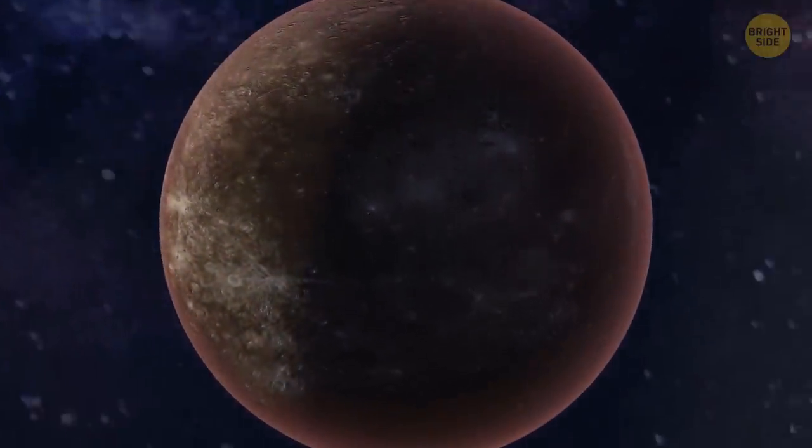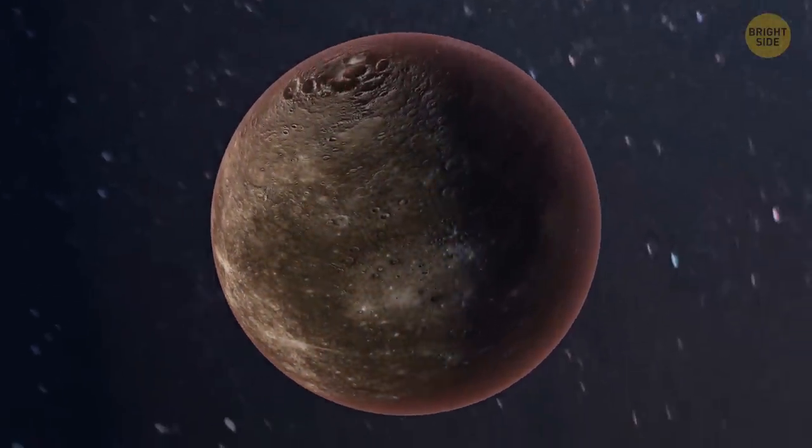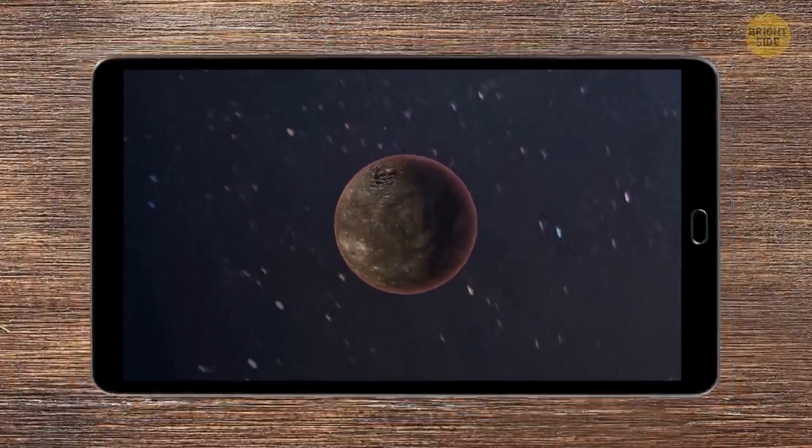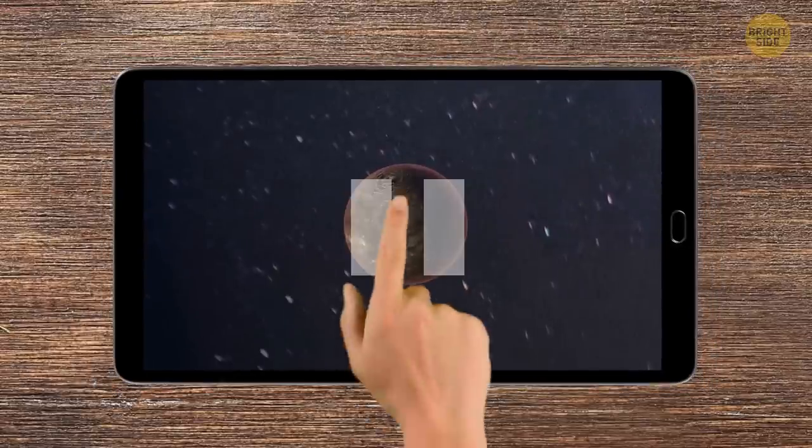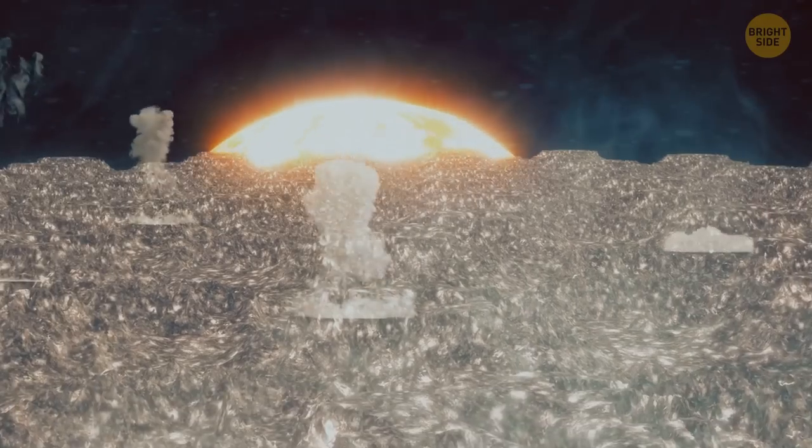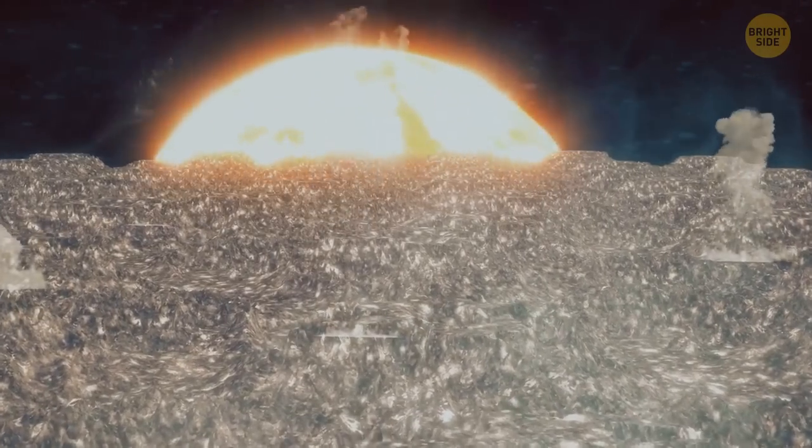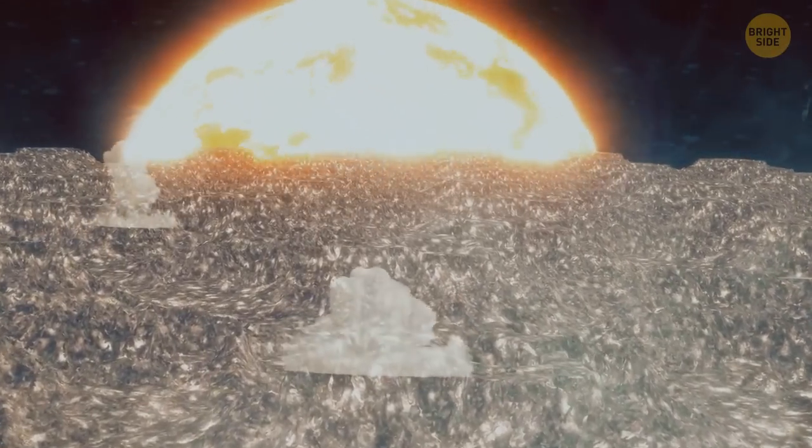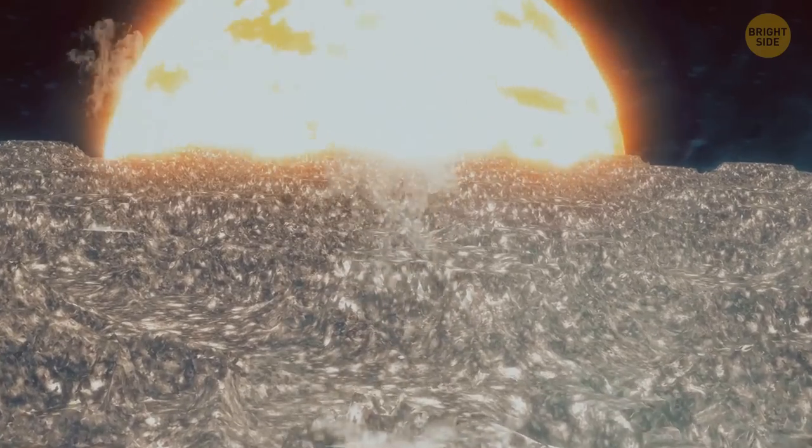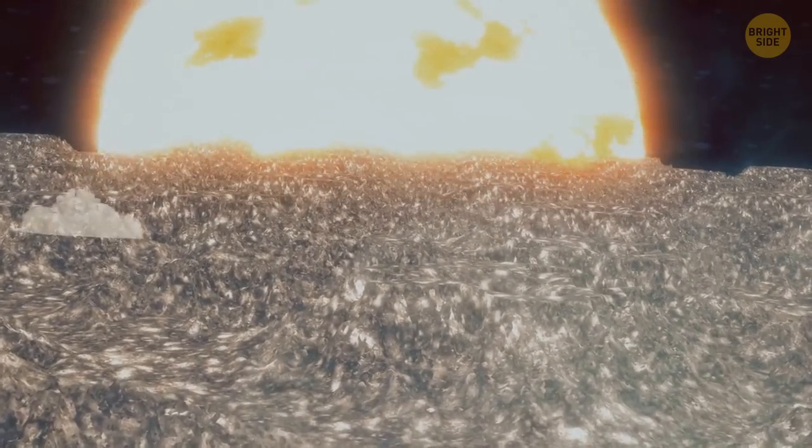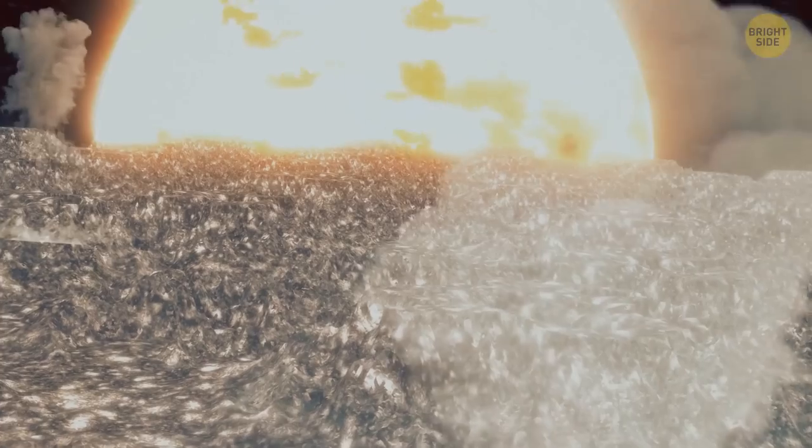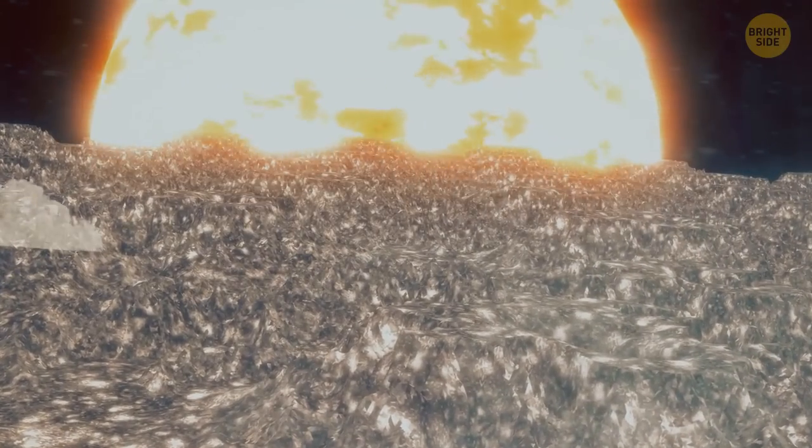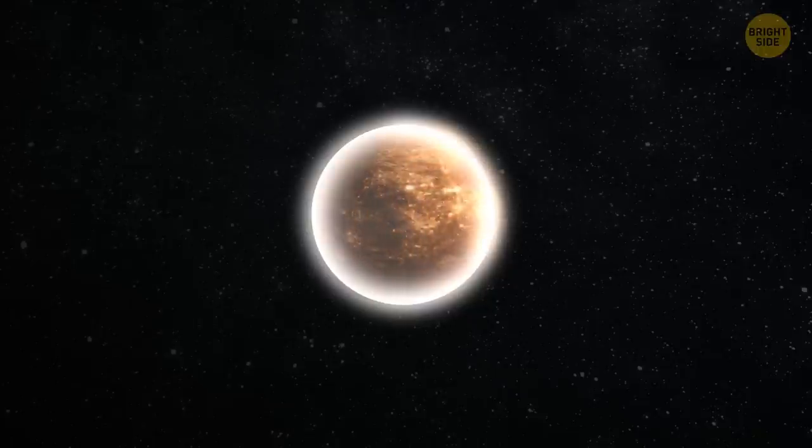The first planet on our list is Mercury, the smallest planet in our solar system. But now, forget about the moon-like Mercury. Instead, picture yourself on the surface of a super dynamic incandescent inferno. There are a lot of craters and active volcanoes around you, and right in front of you is a huge, blinding bright sun. What a nightmare!